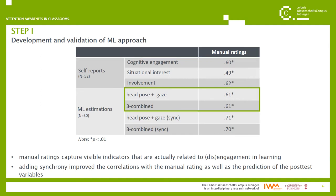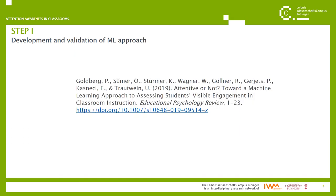Furthermore, we found high correlations between the manual rating and the visual features the automated analysis was based on. Adding synchrony further improved the correlations with the manual rating as well as the prediction of the post-test variables in general. This study has already been published and you can find it under this citation, in case you are interested in more details regarding the study design, methods, analysis, or the results.